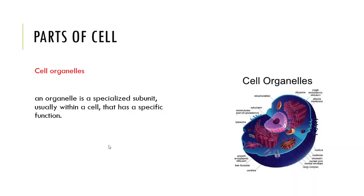The next: cell organelles. First of all, we should know what are cell organelles. An organelle is a specialized subunit, usually with a specific function. For example: endoplasmic reticulum, mitochondria, chloroplast, vacuole, and centriole. Now we will discuss these organelles and their functions one by one.